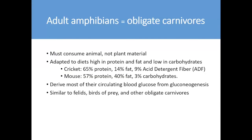Adult amphibians are carnivores and require animal material. Their diets are generally higher in protein and fat — these are indicative, not definitive numbers. Our requirement models borrow heavily from obligate carnivores, which includes felids, birds of prey, crocodilians, and snakes.